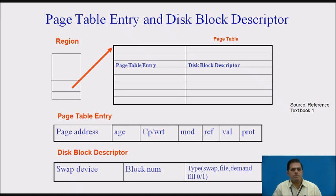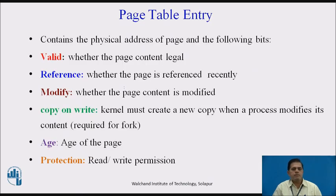For the disk block descriptor, we have the swap device, block, and file-to-block conversion. The page table entry contains the physical address of the page and the following bits: valid (whether the page content is legal), reference (whether the page was referenced recently), modify (whether page content is modified), copy-on-write (the kernel must create a new copy when a process modifies content, required for the fork system call), age (the age of the page), and protections (permissions for read and write).